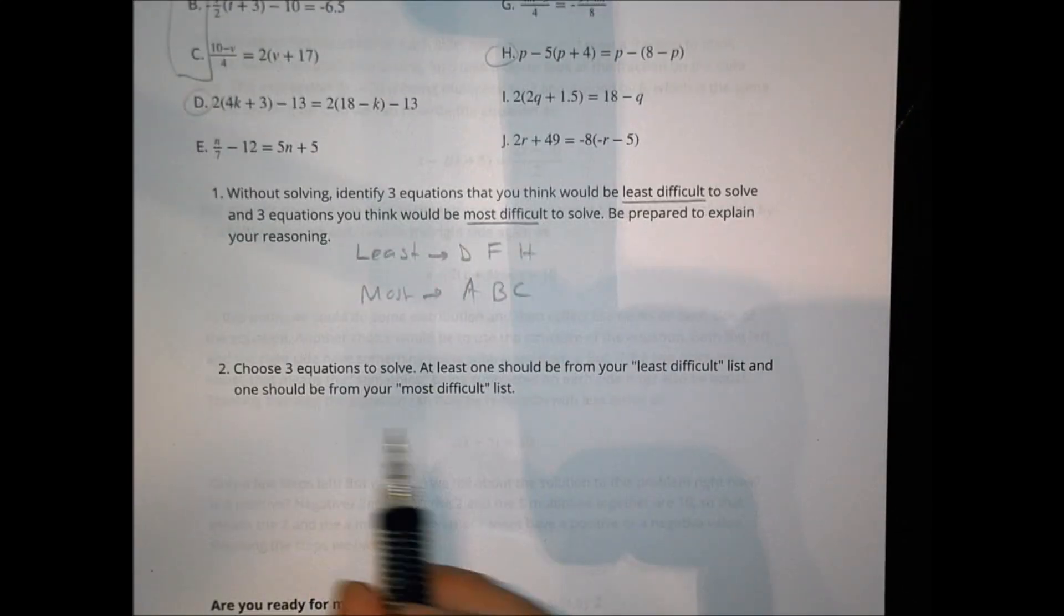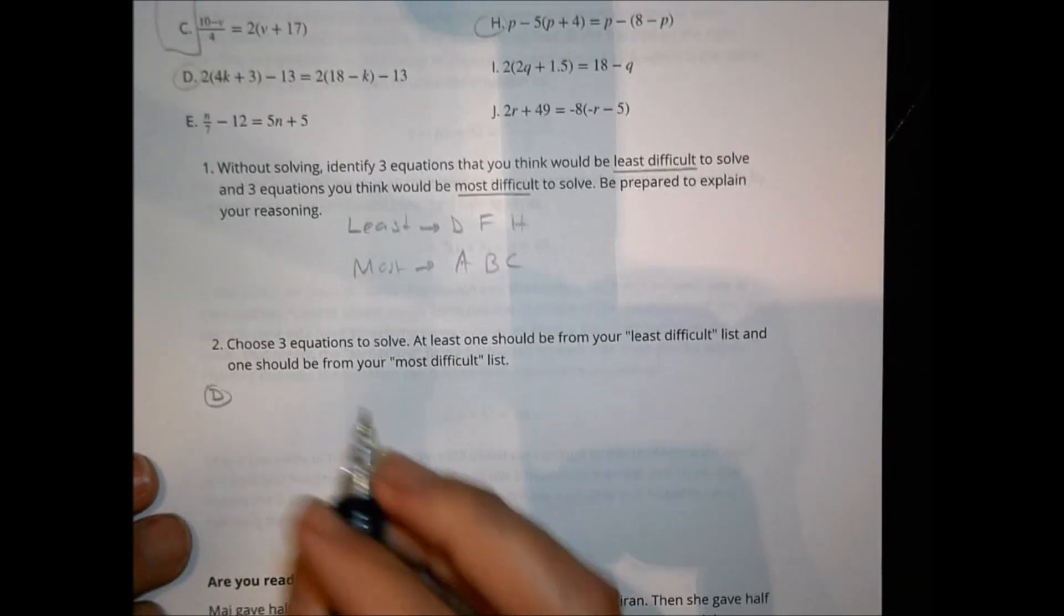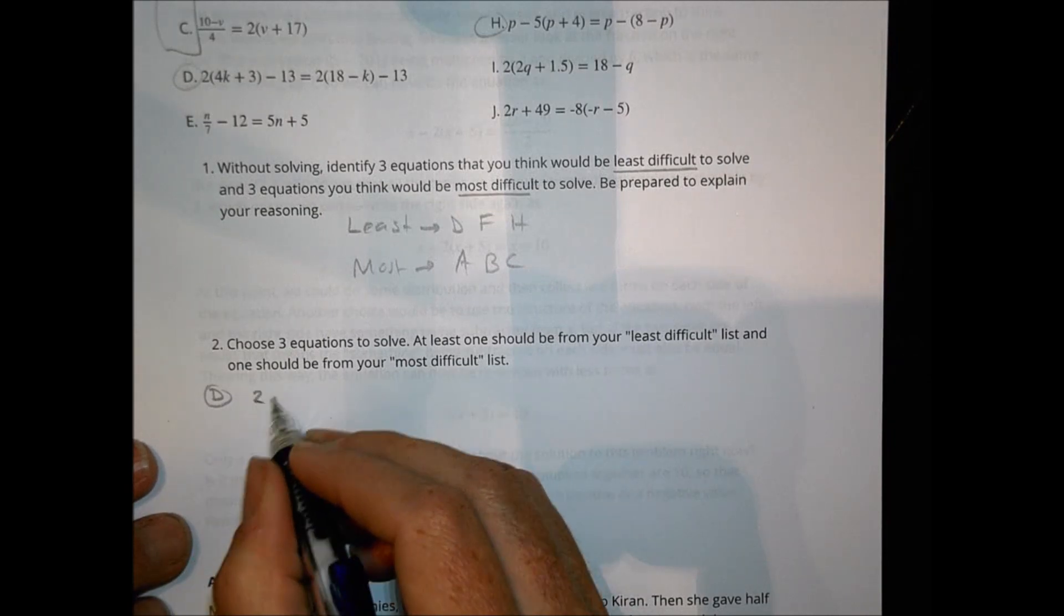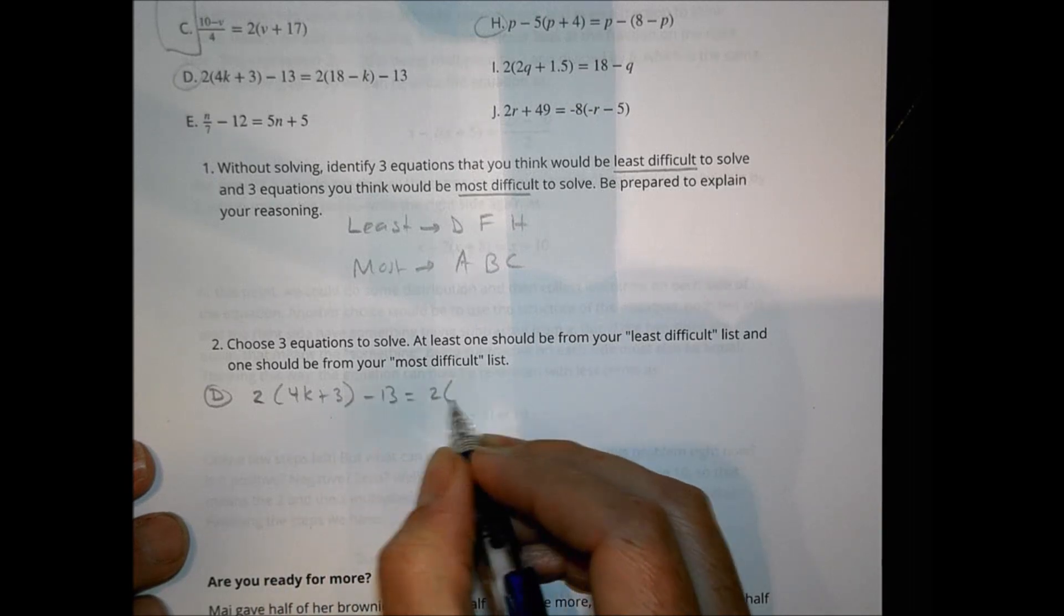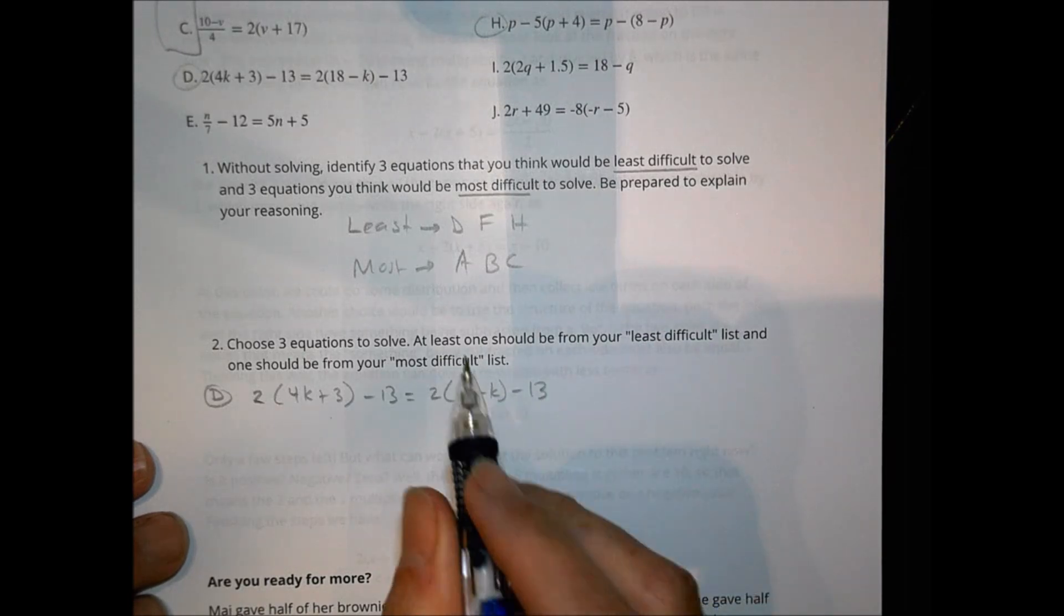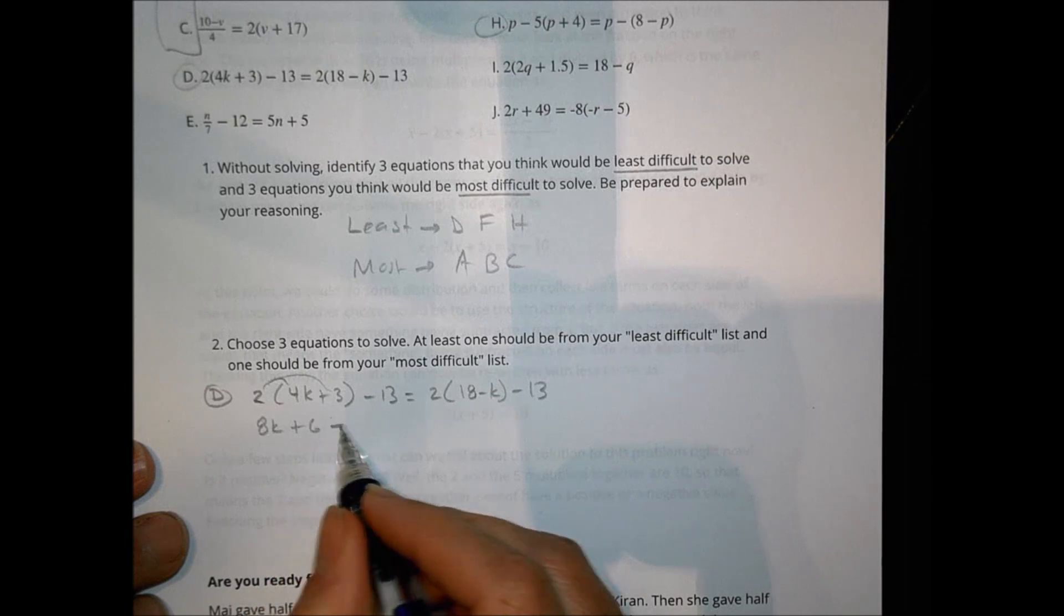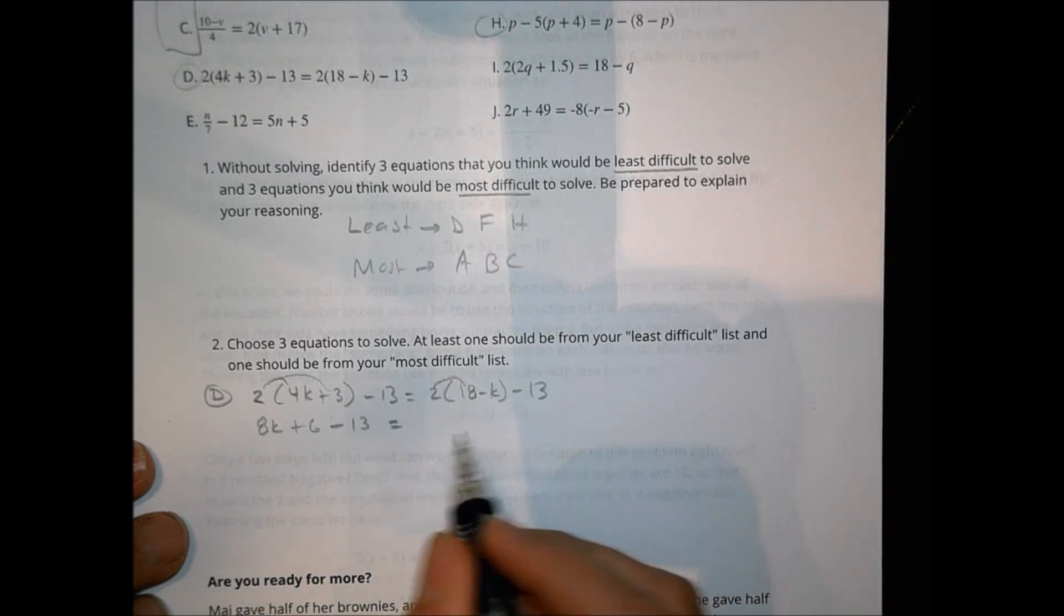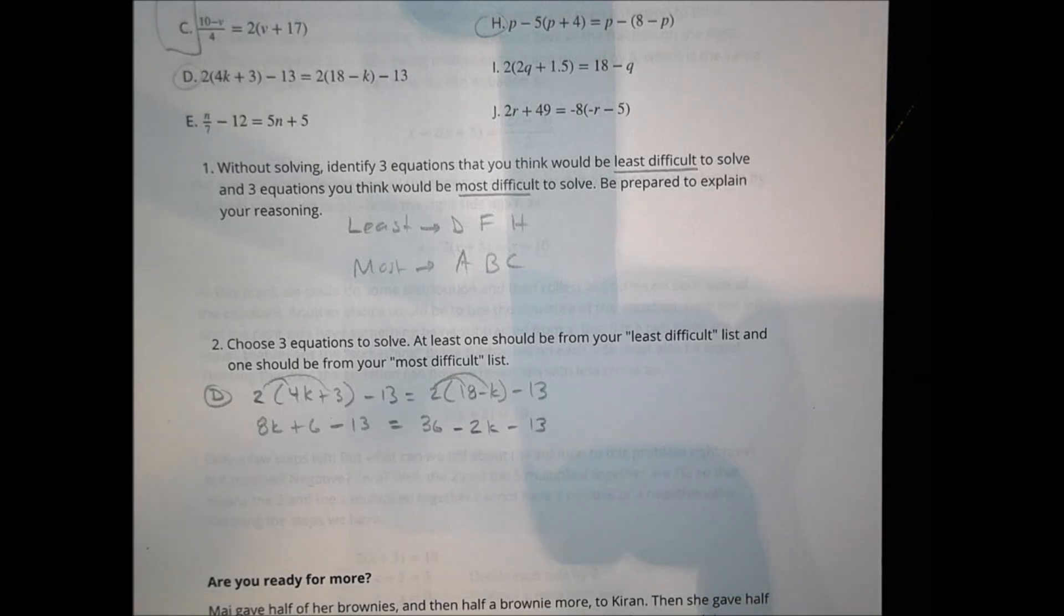So to solve some of these, I want you to pick one of your least and one of your most to solve. So I went ahead and chose letter D, and letter D as an equation is two times the sum of 4K plus three minus 13 equals two times the sum of 18 minus K minus 13. So the first thing I wanted to do is distribute the two. So two times 4K is 8K. Two times six is plus six. And we put minus 13 there. Distribute here. Two times 18 is going to be 36. And two times minus K is negative 2K. And we have a minus 13 that stays right there.